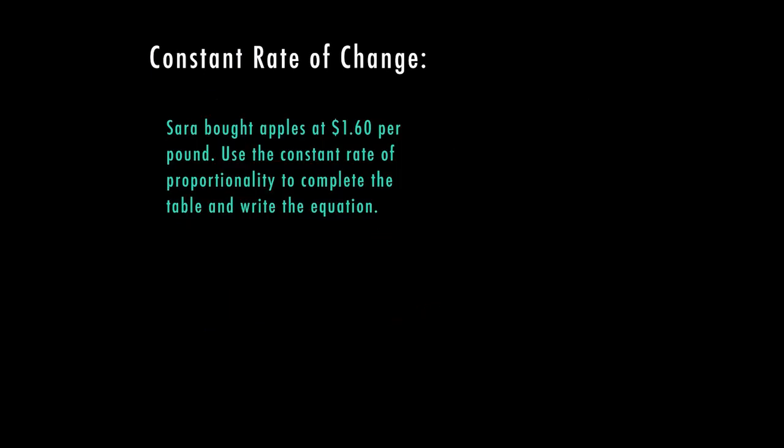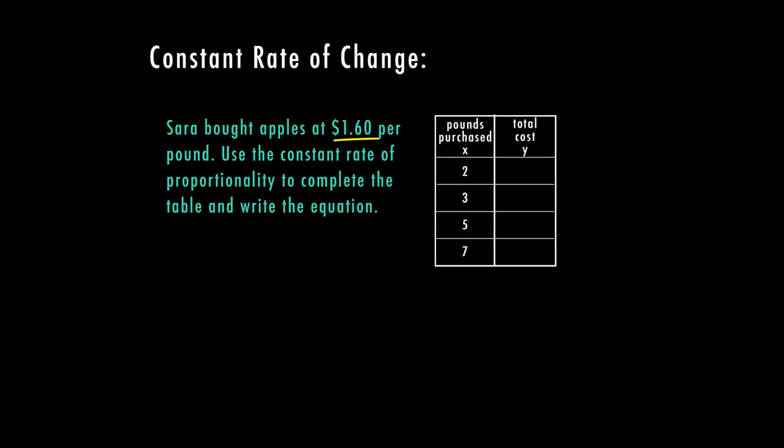So let's go ahead with the third example. Sarah bought apples at $1.60 per pound and used the constant rate of proportionality to complete the table and write the equation. So I can see here that each apple cost $1.60 per pound. And so this is the situation where you go up to the register and you have to weigh whatever you're buying and it's going to charge you $1.60 per pound, which means we bought two pounds. We want to multiply that times $1.60 and two times $1.60 is going to equal $3.20.